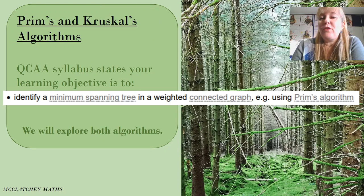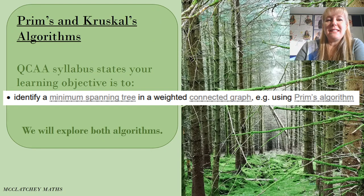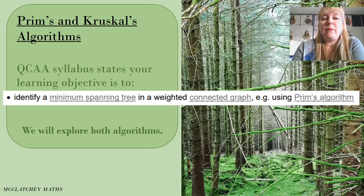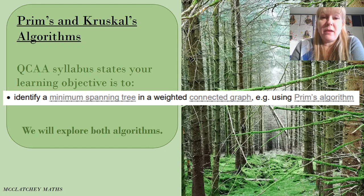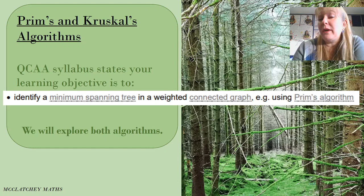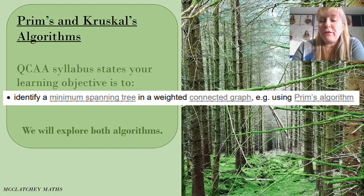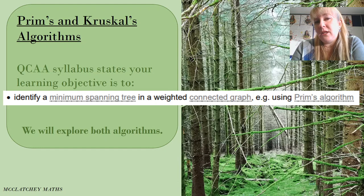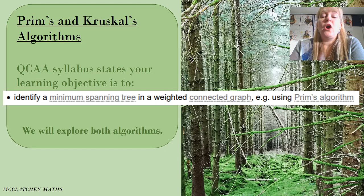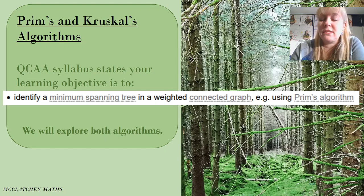From the QCAA syllabus, our learning goal is to identify a minimum spanning tree in a weighted connected graph, with Prim's algorithm listed as an example. In this video I'm also going to explore Kruskal's algorithm. It's a good idea to know both — you may prefer one over the other. There are actually numerous methods out there and I've chosen to take you through two today.